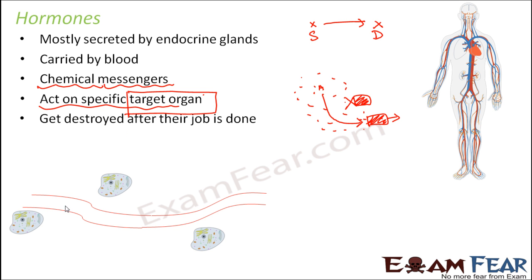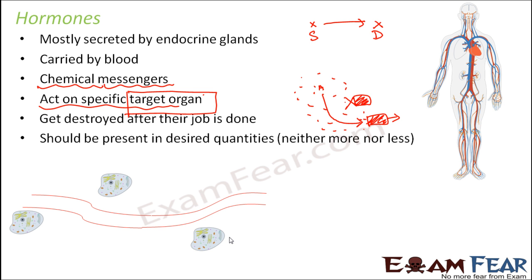Here you can see these two red lines show the flow of blood, and here are different cells — three cells which represent different cells of the body. Now if there are hormones flowing through the blood, they will only attack the target cell. This is the cell which has got the receptor for this particular hormone. These other two cells are not target cells. Let us suppose this one is the target cell.